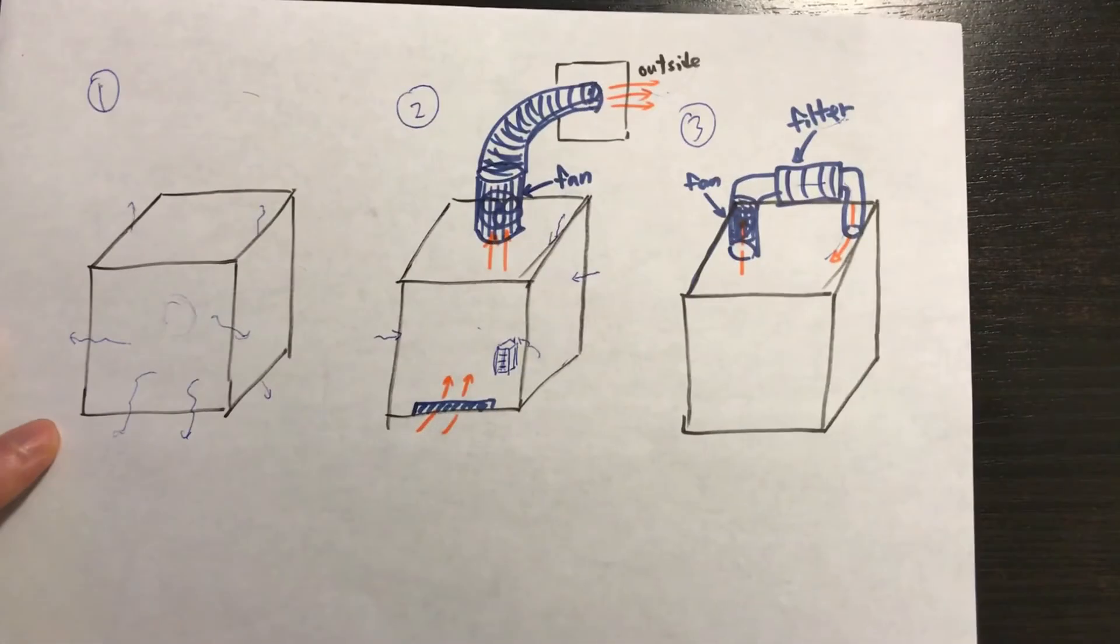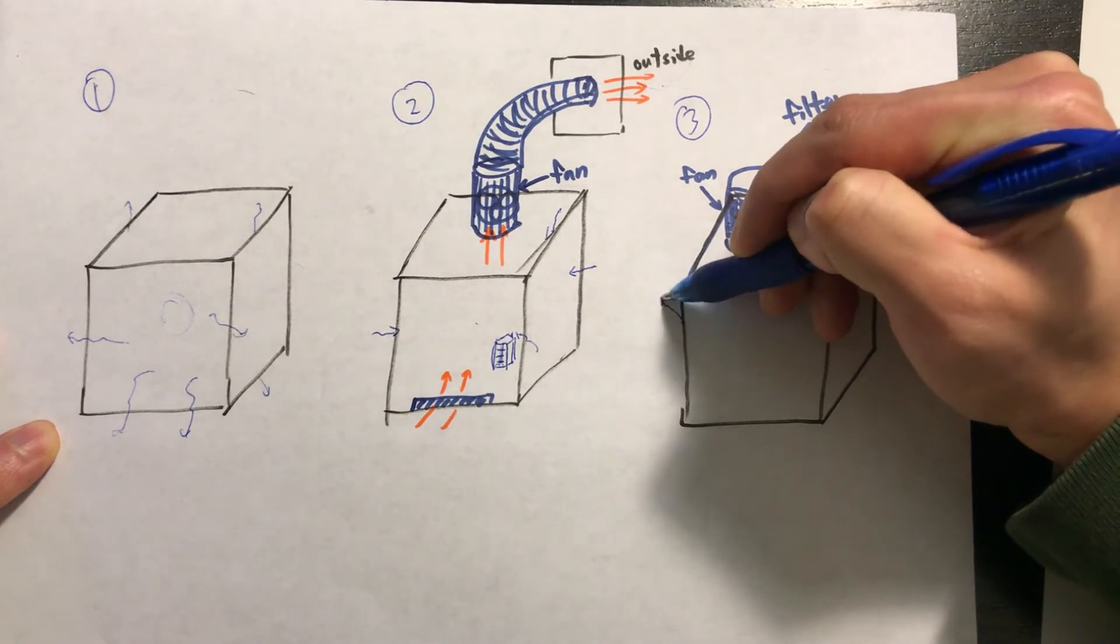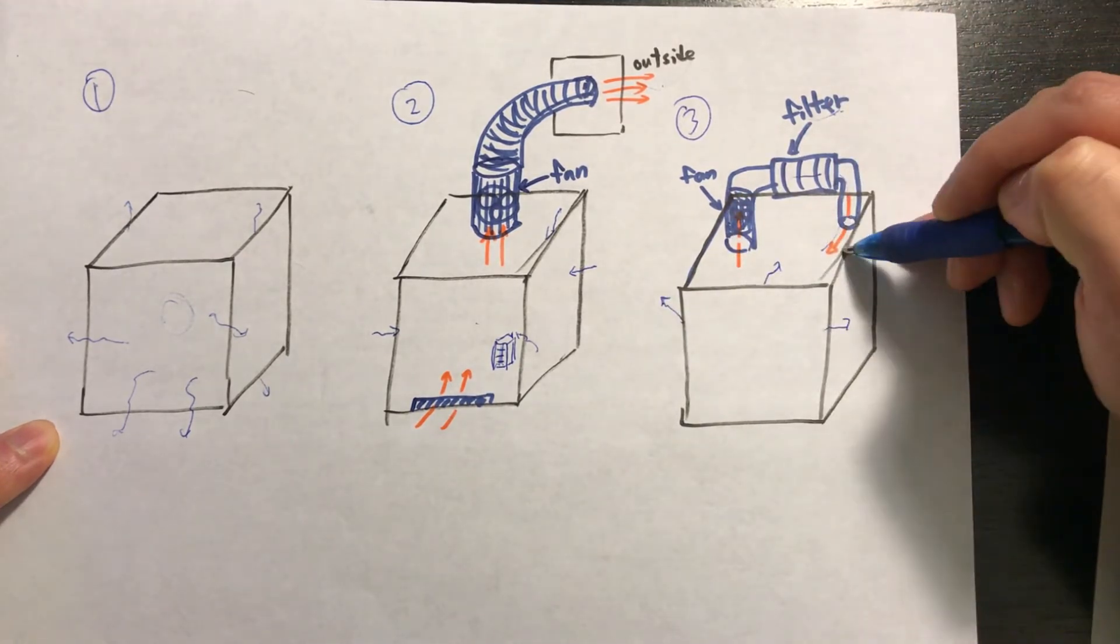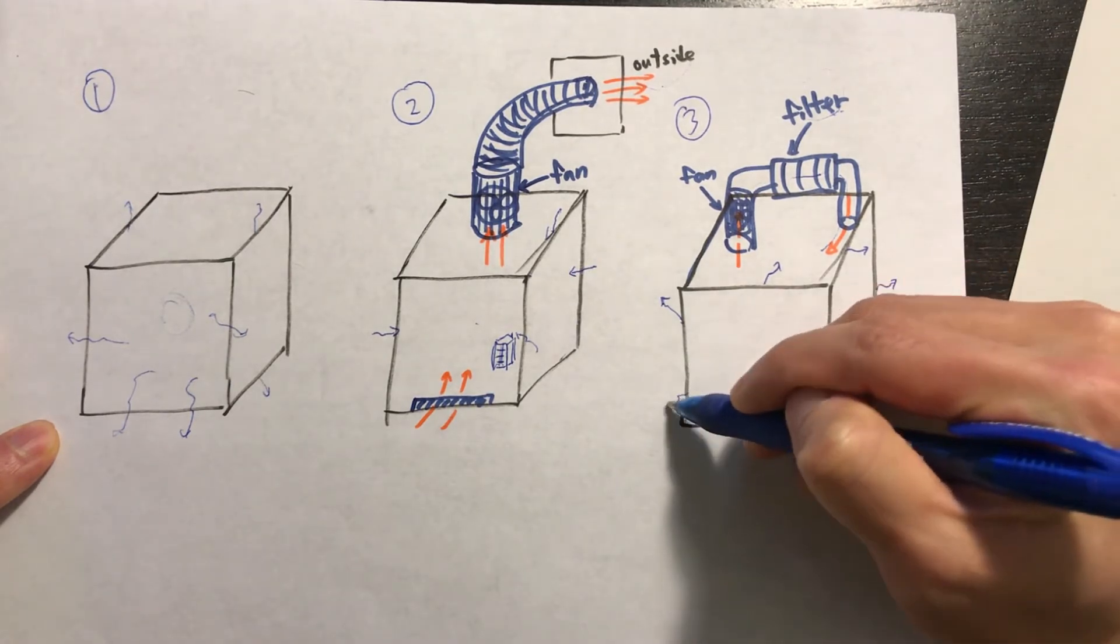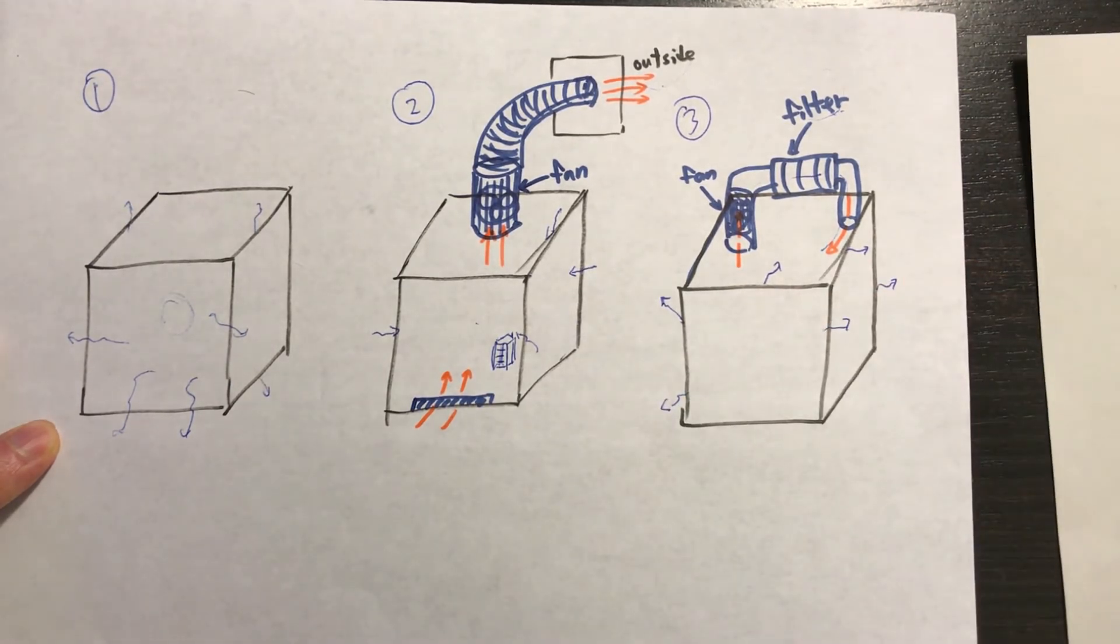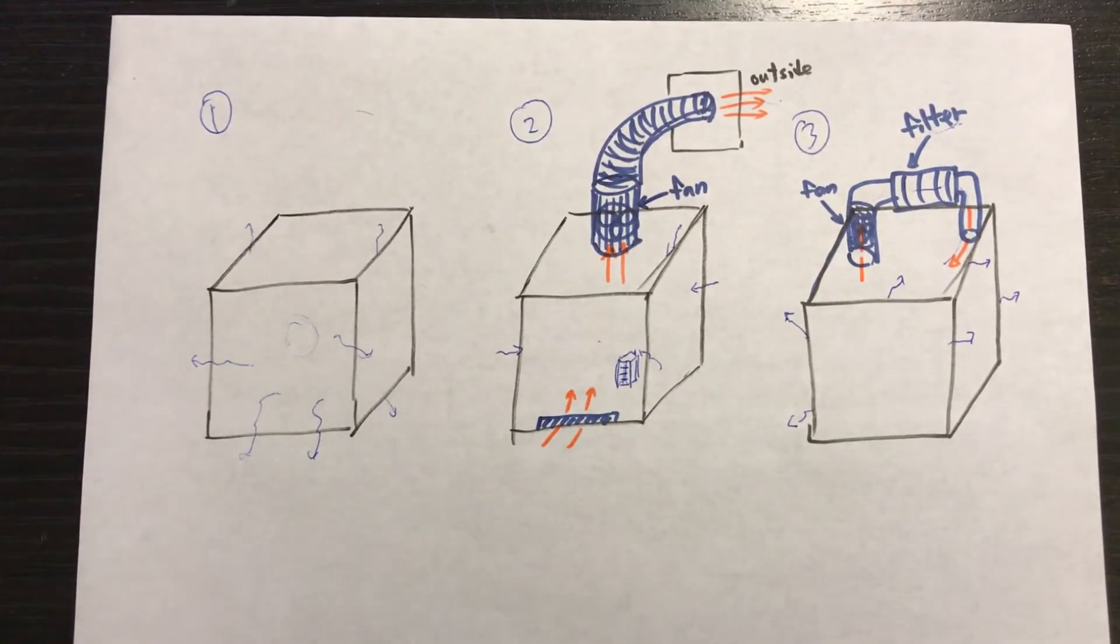Also, similar to the first design, unless the enclosure is completely airtight, some of the heated air will eventually escape through the gaps around the enclosure because the pressure inside is higher than the outside. So this might not be the best option if you really don't want to breathe in plastic fumes.